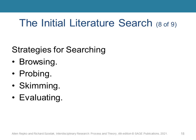The fifth and final search strategy we will use is to make decisions about each source, whether it is relevant and useful, and how we plan to use it in our work. After the full-scale literature search, we will decide, once and for all, whether the problem as a whole is researchable and appropriate for interdisciplinary study.